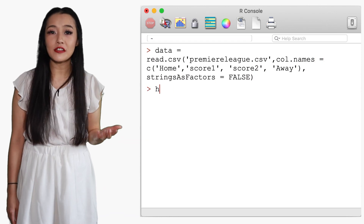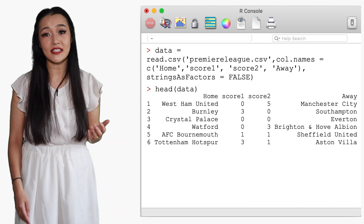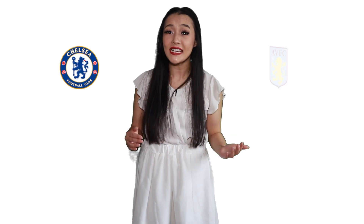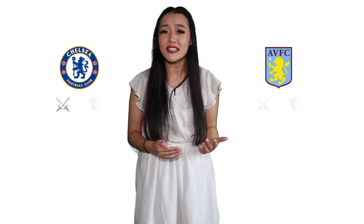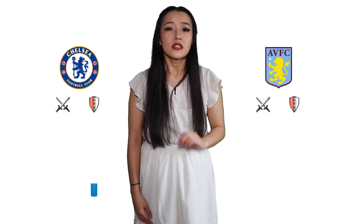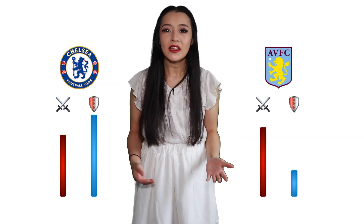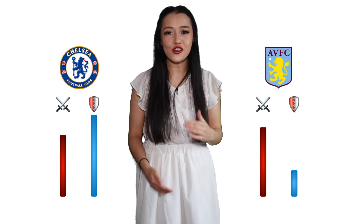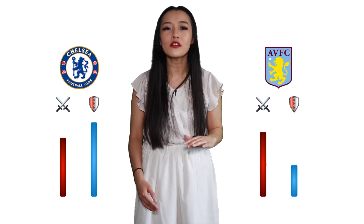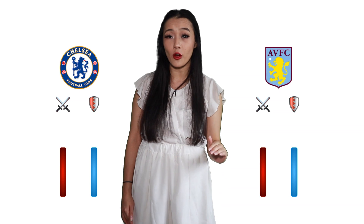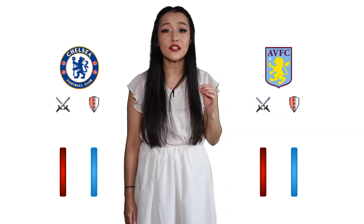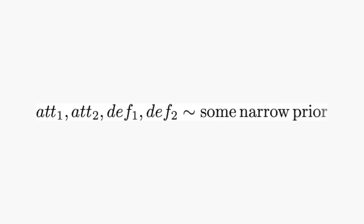The data is heterogeneous. For example, the overall attack ability versus the defense ability of the entire league is not necessarily the same for each team — some teams will be better at defense and some better at attack. If we ignore the heterogeneity and assume all teams have the same performance, we could define a very narrow prior on the attack and defense abilities such that they are all essentially the same value.